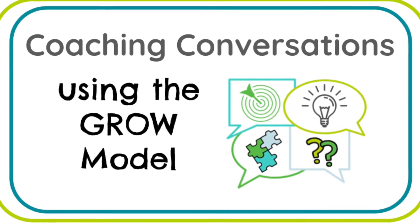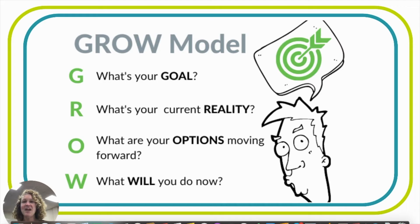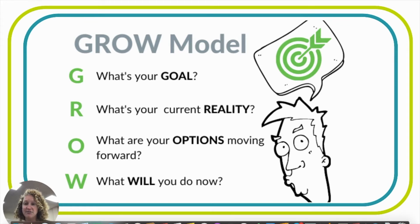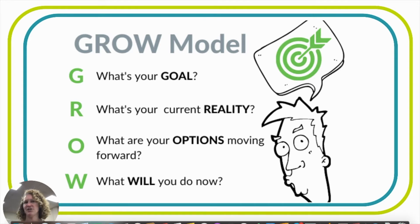Using the GROW model during coaching conversations. So what does the GROW model stand for? G stands for Goal — as you're coaching your coachee, you're going to make sure that they first identify their goal: what is their goal, what are they trying to accomplish? Then the R is their Reality — what is their current reality?